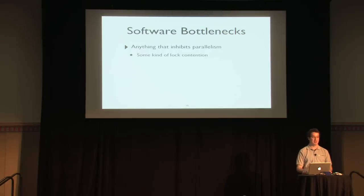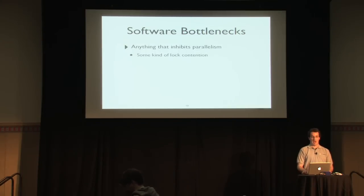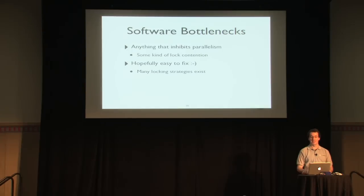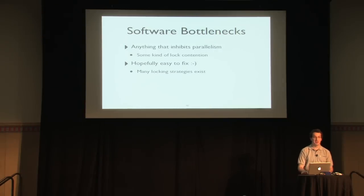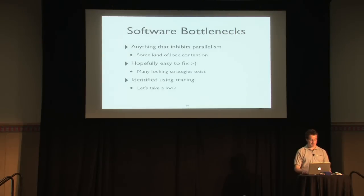A software bottleneck is broadly defined as something that inhibits parallelism across this collection of processes — usually some kind of lock contention. Since we're looking at things that take dozens of seconds, it's going to be something in our software. Once we identify the software contention it should be easy to fix — unlike hardware contention where you'd just throw more hardware at the problem. We can't buy faster code. Luckily we have textbooks full of locking strategies like reader-writer and RCU. The technique we'll use to identify bottlenecks is tracing.